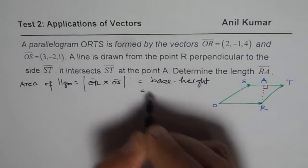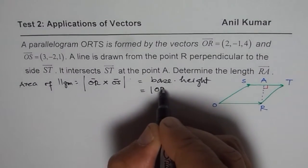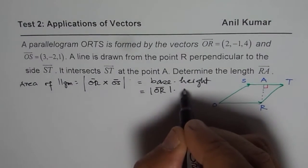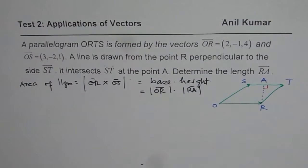In our case, the base is OR, so magnitude of OR. Magnitude of OR times height RA or the magnitude of RA. So that is what it is.